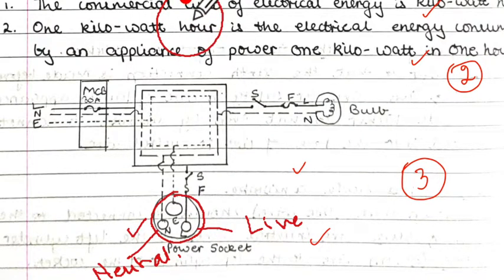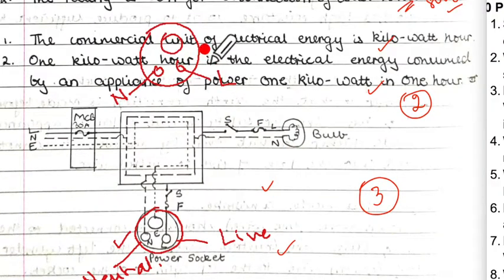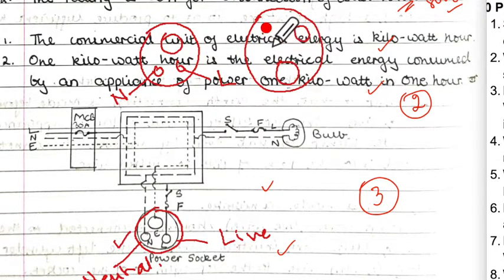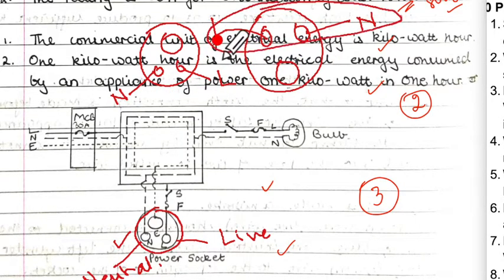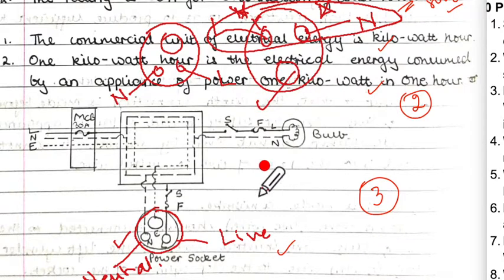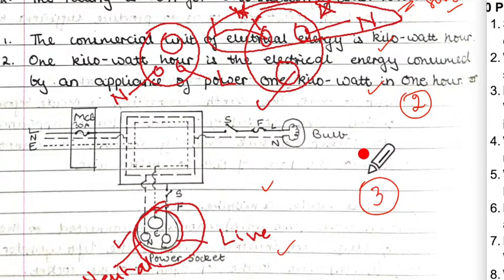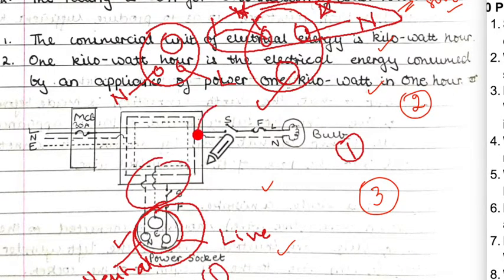If you draw the socket above, show it so that the right side is live and the left side is neutral. If you rotate the socket orientation, the sides change, so be very careful. If you incorrectly label left as live or right as neutral you will be wrong. To avoid confusion and save time, draw it in the standard orientation. Marks are awarded one each for the bulb, the socket, and for showing all labels correctly.